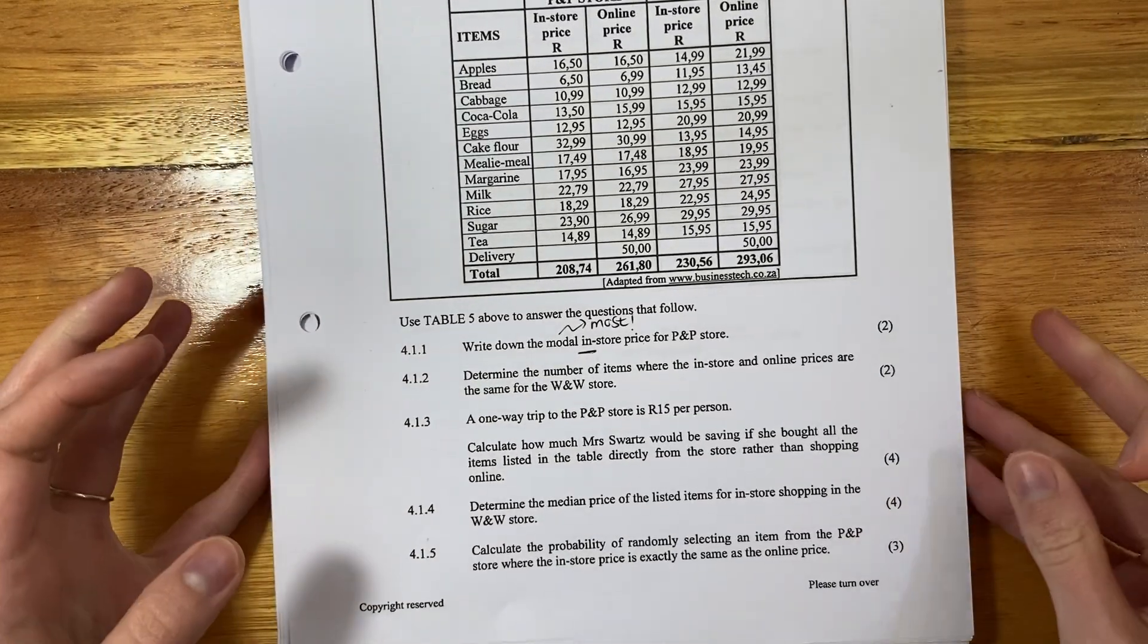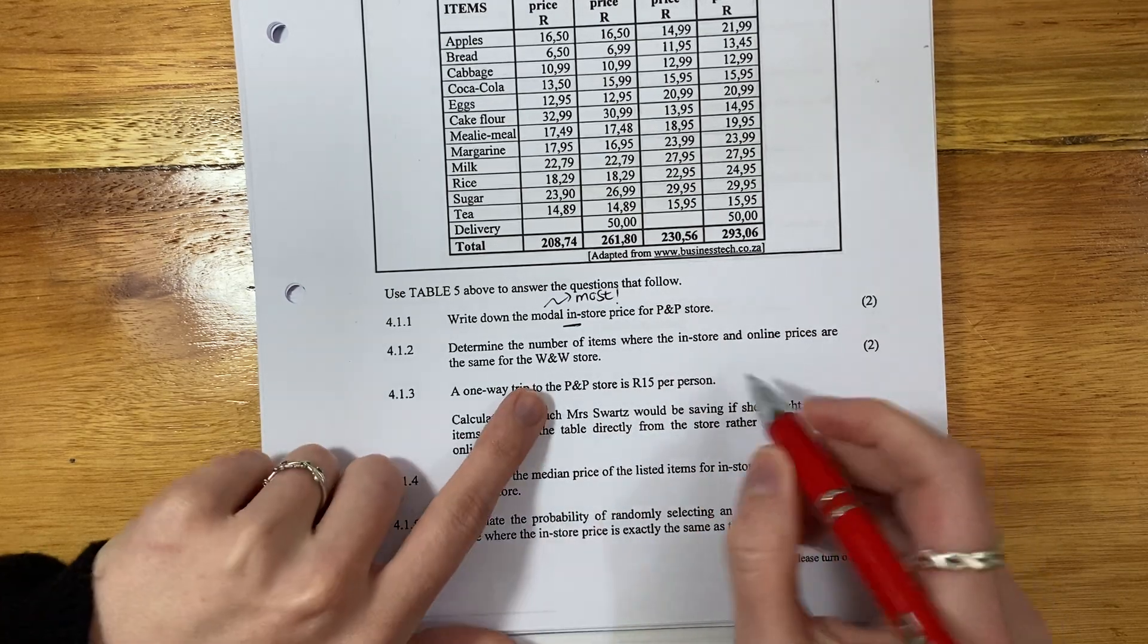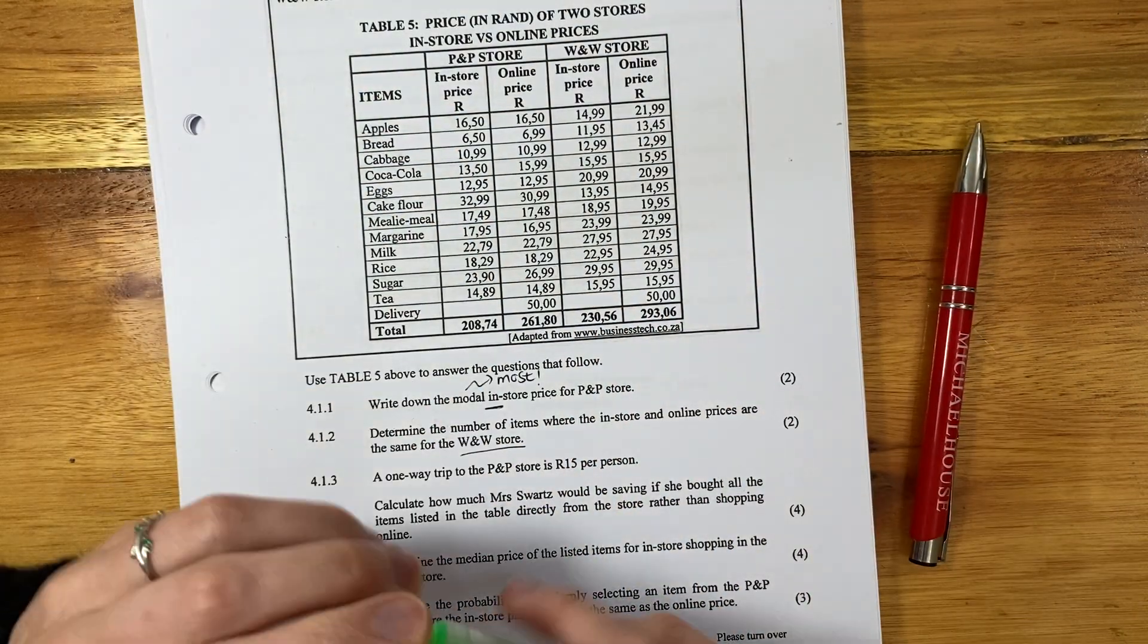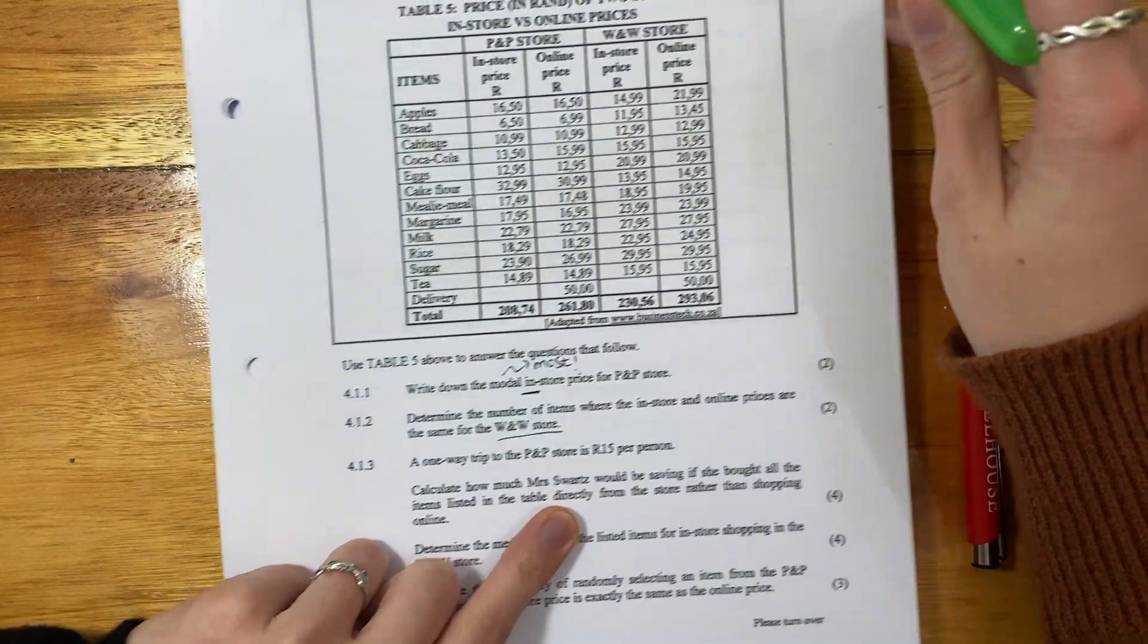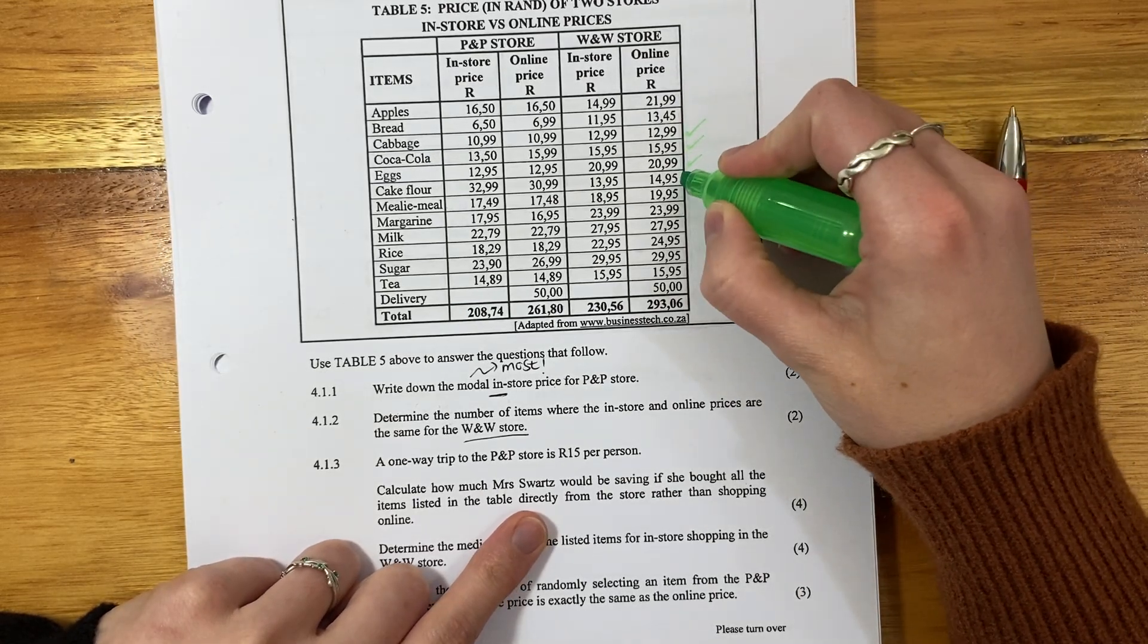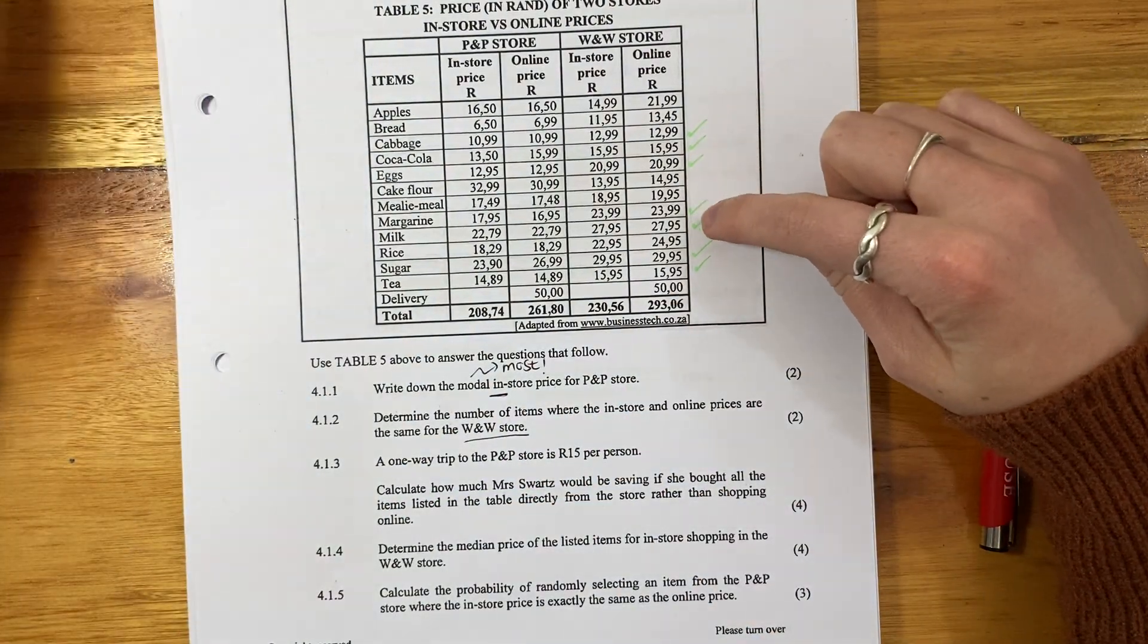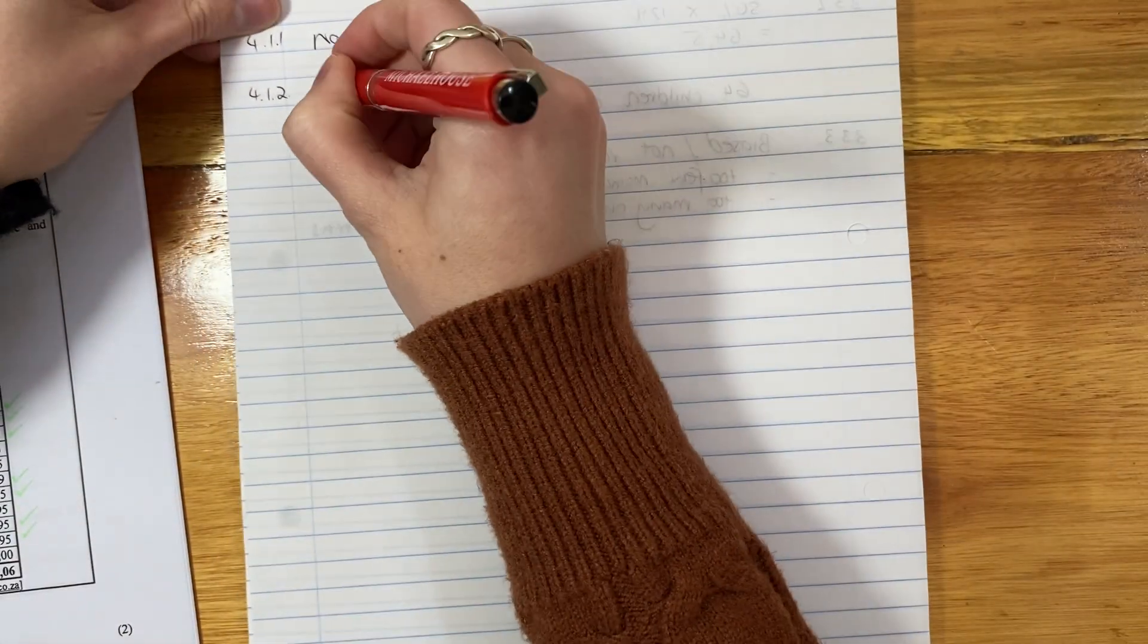Then 4.1.2. Determine the number of items where the in-store and online prices are the same for the W&W store. So let's look. I'm actually going to take a highlighter. It's always good to use a highlighter in these instances because there's a lot of information, so it's easy to get confused. Let's look for W&W. Were they the same? Yes, yes, yes, no, no, yes, yes, no, yes, yes. How many are there? One, two, three, four, five, six, seven.